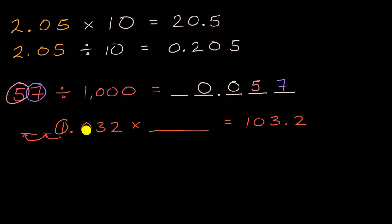Every digit shifted two places to the left, so we must have multiplied by 10 twice. You could say times 10 times 10, or just times 100. Let's do one more example.